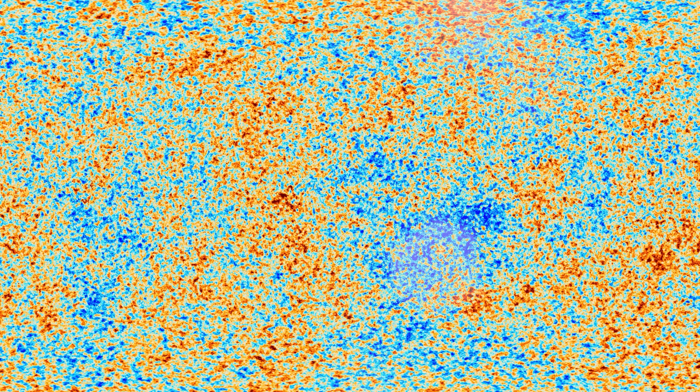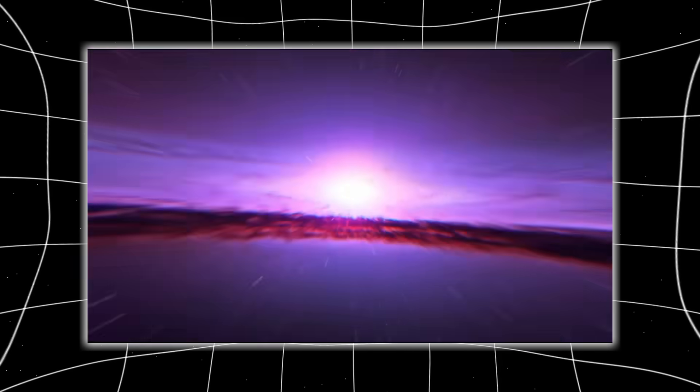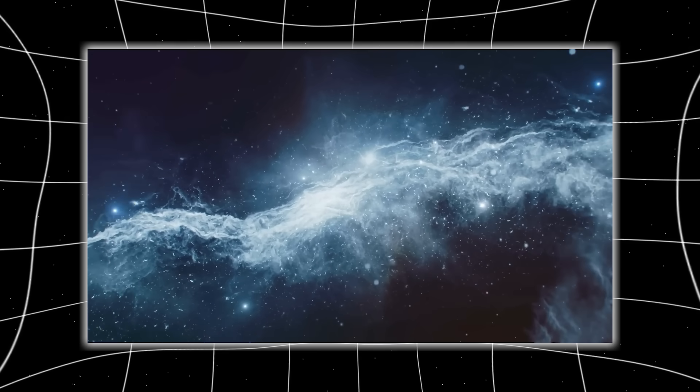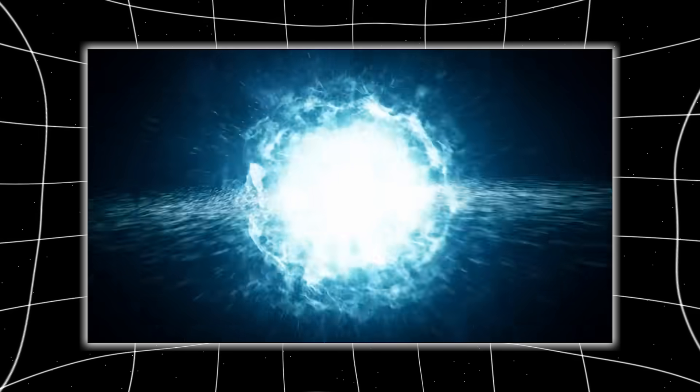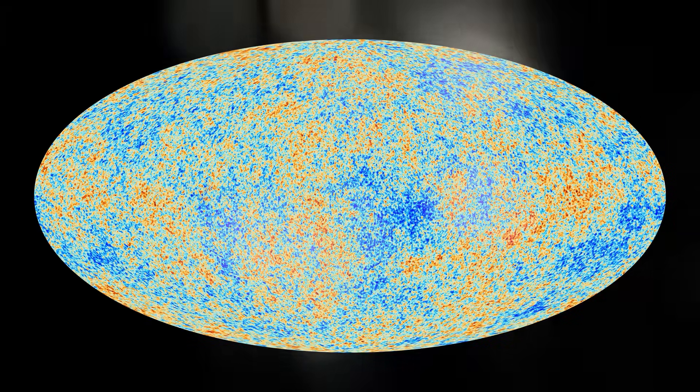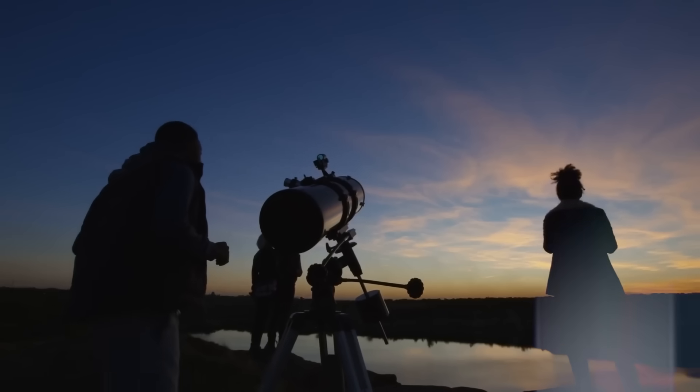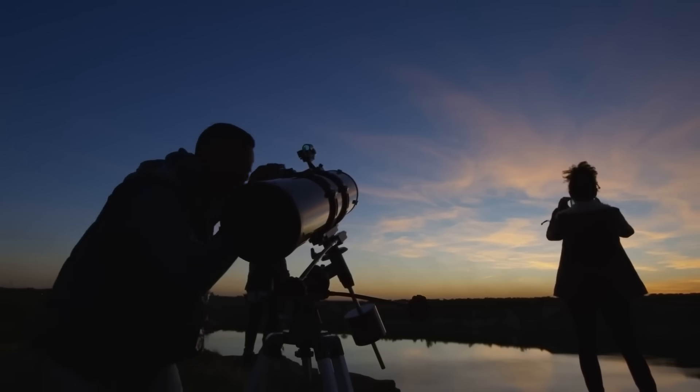What the James Webb Space Telescope detected was never just about stars or black holes or dust drifting through time. It was about truth. A truth so vast, so ancient, and so intricately woven into the fabric of everything, that to witness it is to feel the scaffolding of reality tremble beneath your feet. We didn't just see the unimaginable, we unlocked it. Not by force, but by attention. By daring to ask questions no civilization before us had the technology or the audacity to pose. Galaxies too mature. Chemistry too complex. Patterns too perfect. Signals too aware. What Webb revealed is not simply that the universe is more mysterious than we imagined, but that it may be aware of our imagination. That perhaps, for the first time in history, the cosmos whispered back, not in words, but in light. In formation. In echoes that bend across time itself.